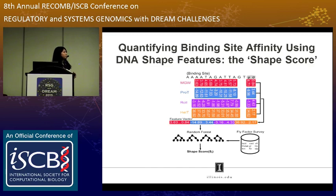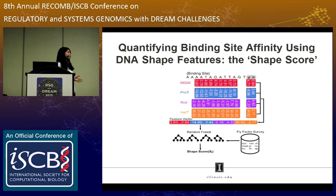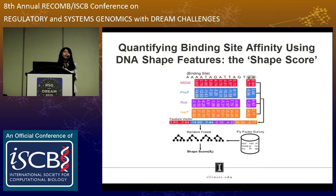For each particular transcription factor, we train a random forest classifier. The training data came from the FlyFactor Survey. In this work, we mainly look at nine types of transcription factors. The random forest predicts a score we define as the shape score, which ranges between zero and one, where one means it is very likely to be bound by that particular TF and zero means very unlikely. After obtaining the shape score, the next step is to plug it into our thermodynamic-based model.